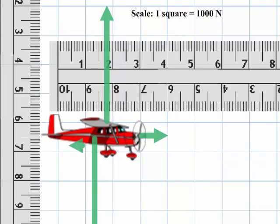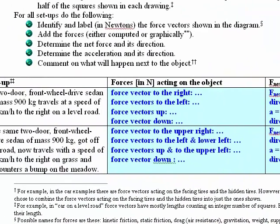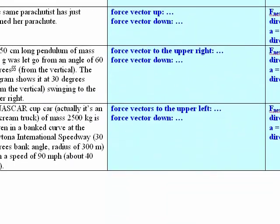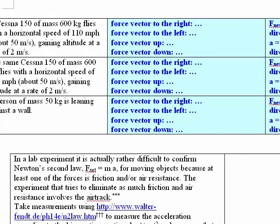Here are a couple of examples for the lab on forces and what you're supposed to do. Let's first look at some of the instructions. It says: for all setups, do the following — identify and label in newtons the force vectors shown in the diagram; add the forces either by computer or graphically; determine the net force and its direction; determine the acceleration and its direction; and comment on what will happen next to the object.